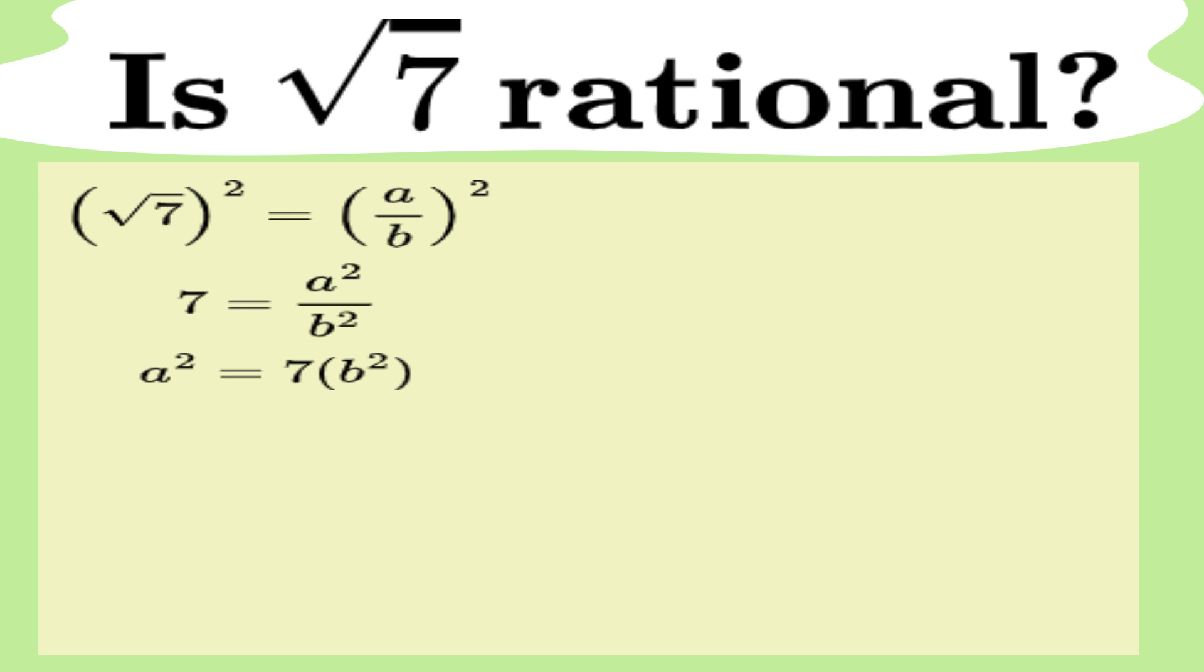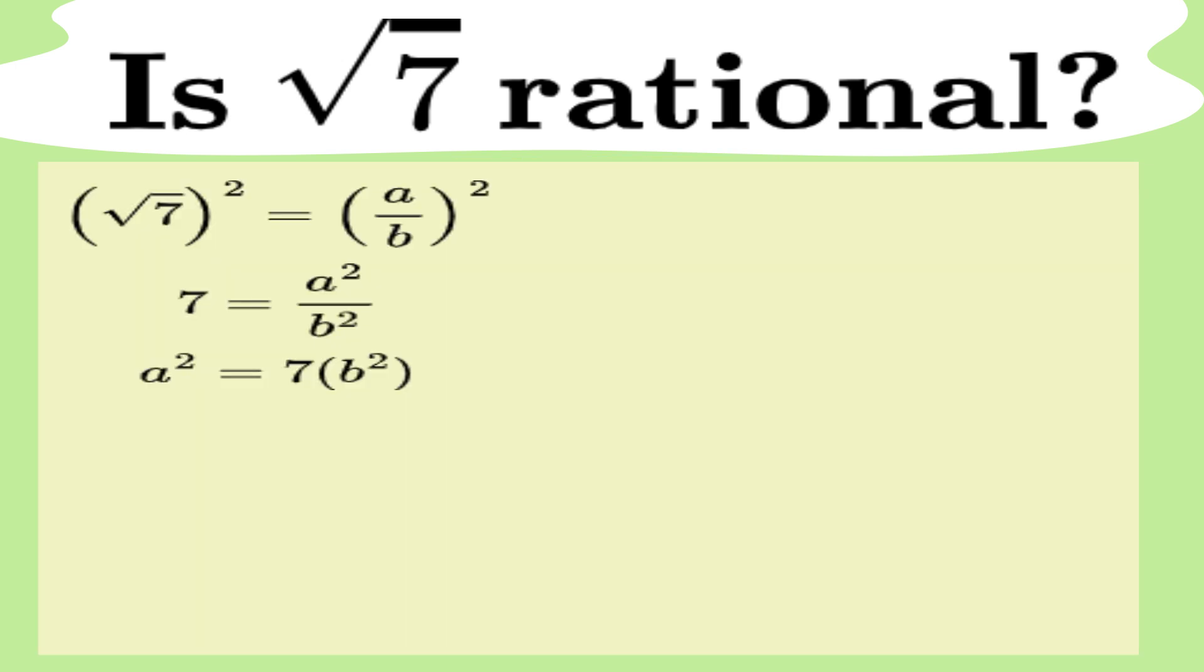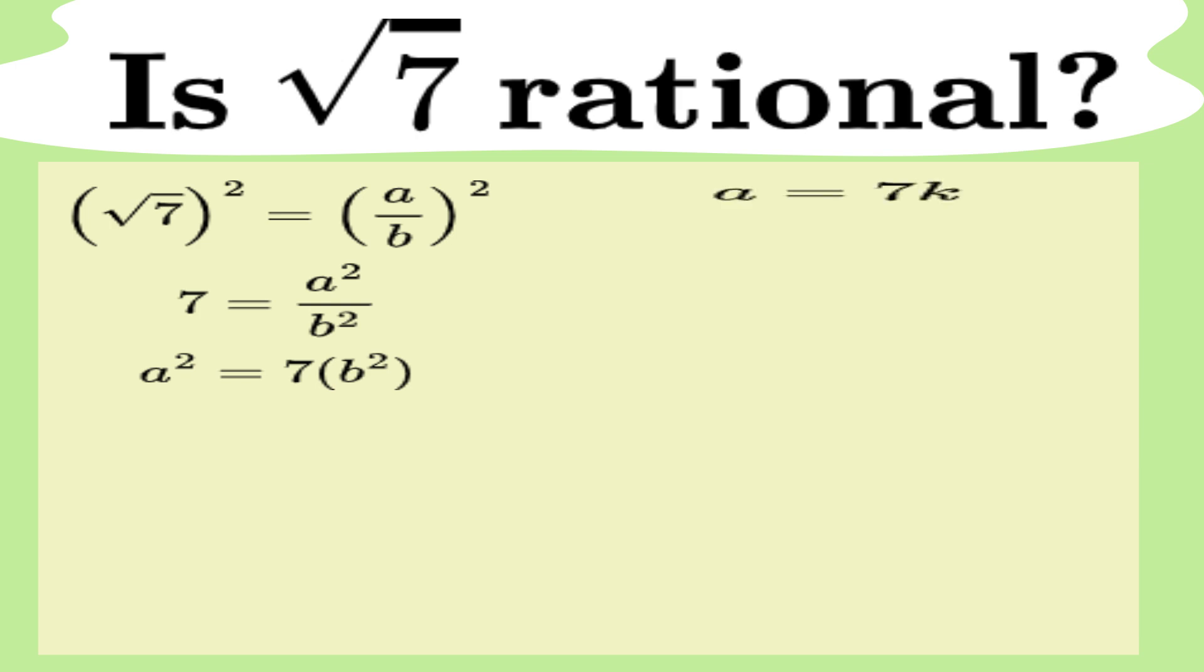There's a really important mathematical rule that says, if a prime number divides a square, it must also divide the number itself. So, because a squared is divisible by 7, this means that a itself must also be divisible by 7. We can write it as 7 times some integer. Let's call it k. So now, we have a equals 7k.